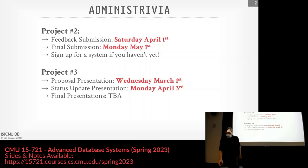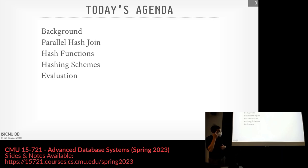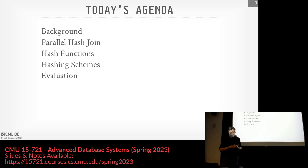Today's class we're going to focus on hash joins. We'll begin with the background of what we need to care about for any join algorithm or operator implementation in a database system. Then we'll focus on how we do the parallel hash join and define the building blocks — the phases. Then we'll talk about how to build a hash table, what the hash functions look like, what the hash schemes look like, and then finish with the evaluation.